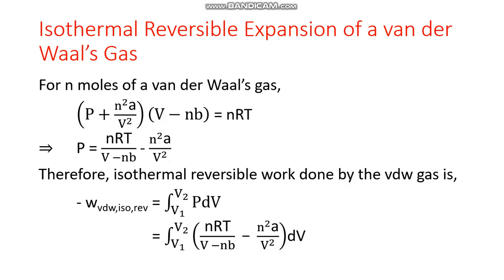We have to start from the van der Waals gas equation, which is: (p + n²a/V²)(V − nb) = nRT, where p is the pressure, V is the volume, n is the number of moles, R is the universal gas constant, T is the absolute temperature, and a and b are the van der Waals constants.